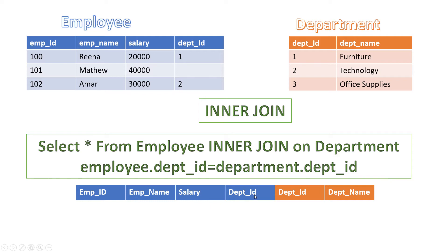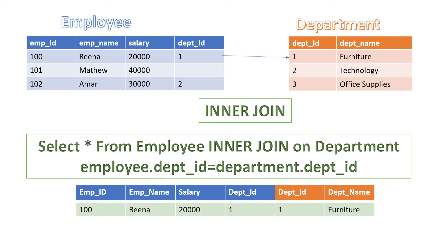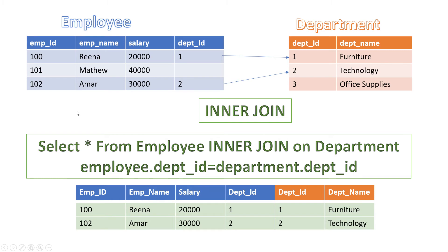If you observe, we have the department ID coming from the employee table and department ID coming from the department table. The department ID 1 in the employee table matches with the department ID 1 in the department table, and we get the output for employee ID 100. Similarly, department ID 2 matches with department ID 2 in the department table, giving output for employee ID 102. Employee ID 101 doesn't have any department ID, so that record will not be present in the result set.